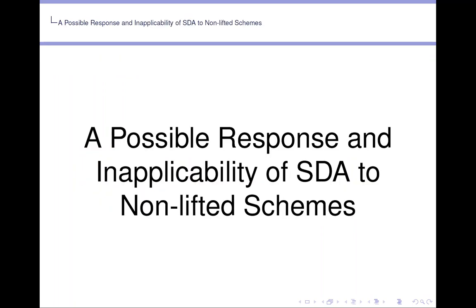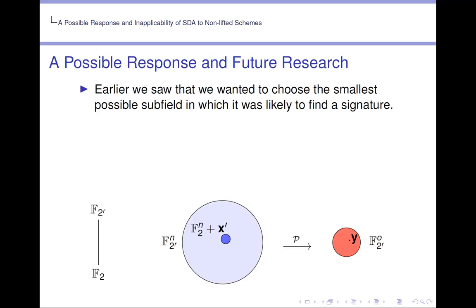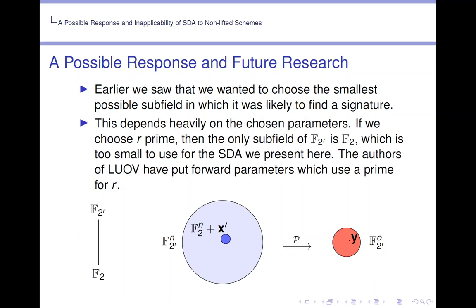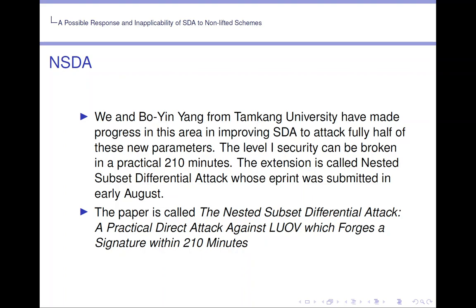A possible response and inapplicability of SDA to non-lifted schemes. Earlier we saw that we wanted to choose the smallest possible subfield in which it is likely to find a signature. This depends heavily on the chosen parameters. If we choose r prime, then the only subfield of F_{2^r} is F_2, which is too small to use for the SDA we present here. The authors of LUOV have put forward parameters which use a prime for r.